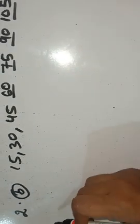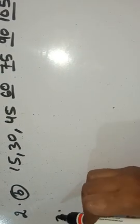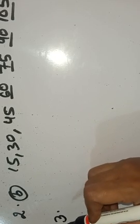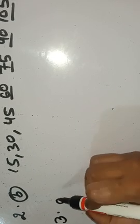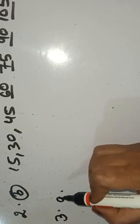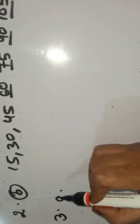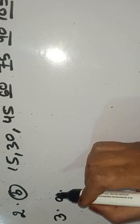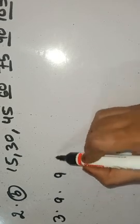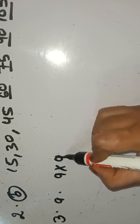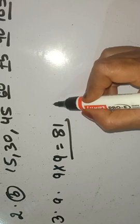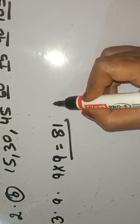So question number 3: answer the following questions. It is very simple and easy. I am taking question A: is 81 a multiple of 9? Yes or no? You must show the method. The answer is yes — you will write: 9 multiplied by 9 is equal to 81, so 81 is a multiple of 9.